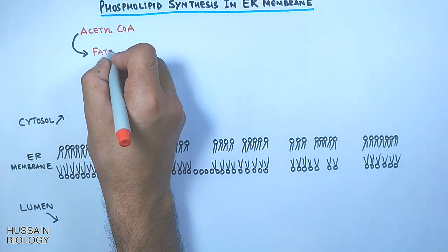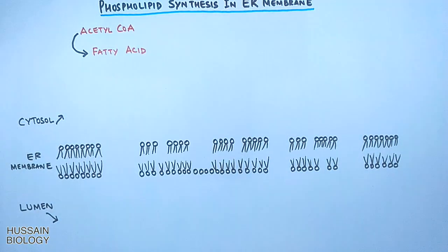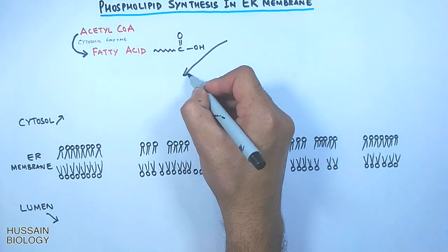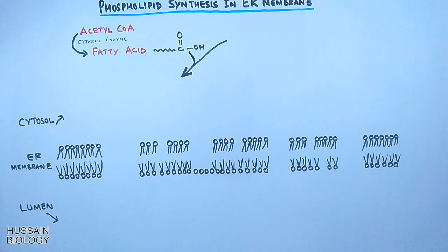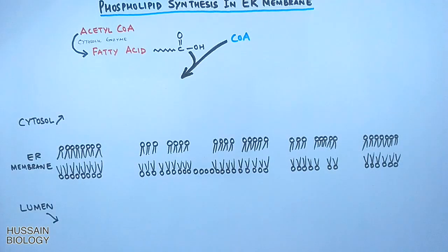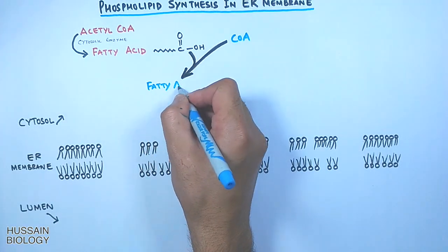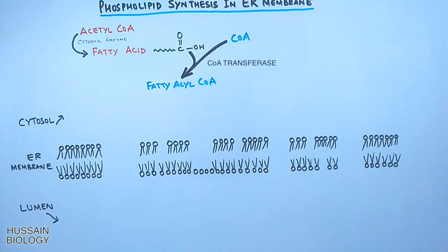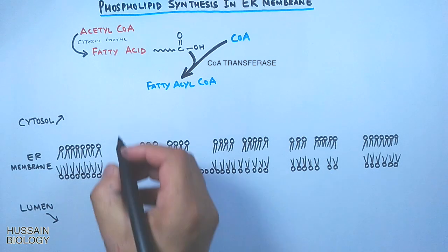From acetyl CoA we get the fatty acids by the action of different cytosolic enzymes. Then CoA is added to this fatty acid, from which we get fatty acyl CoA, and this reaction is aided by CoA transferase.